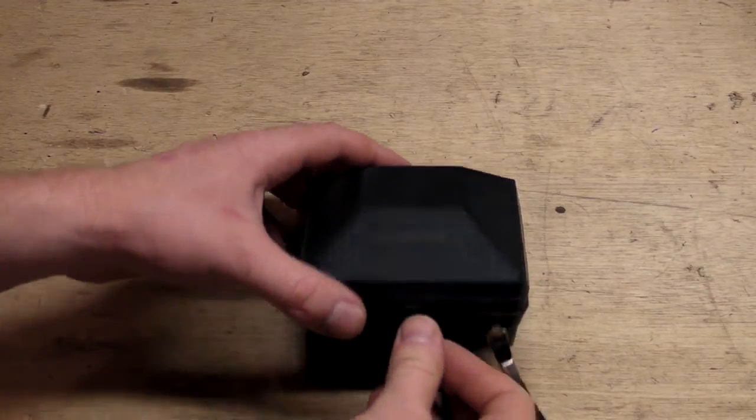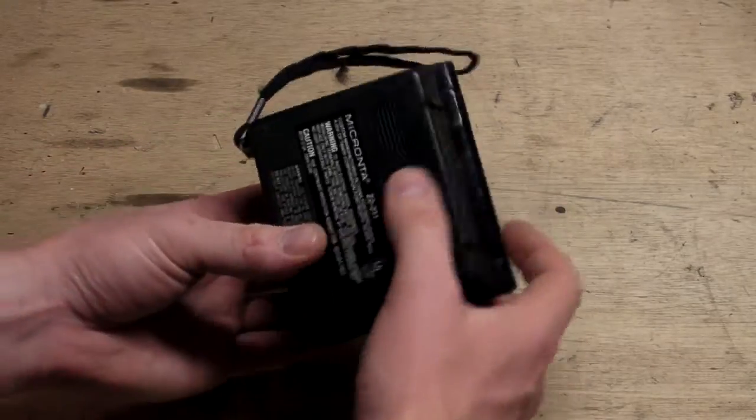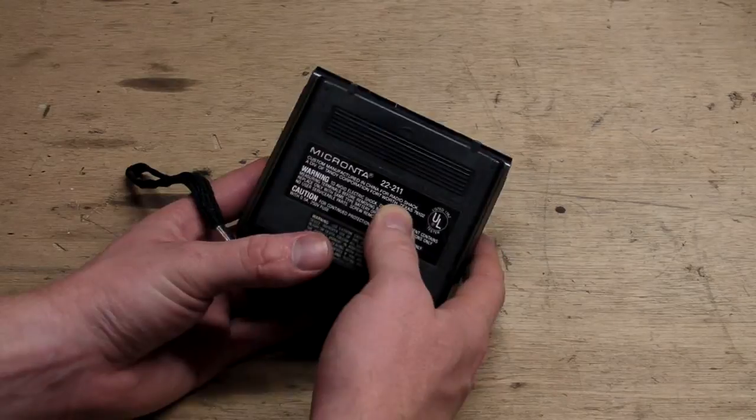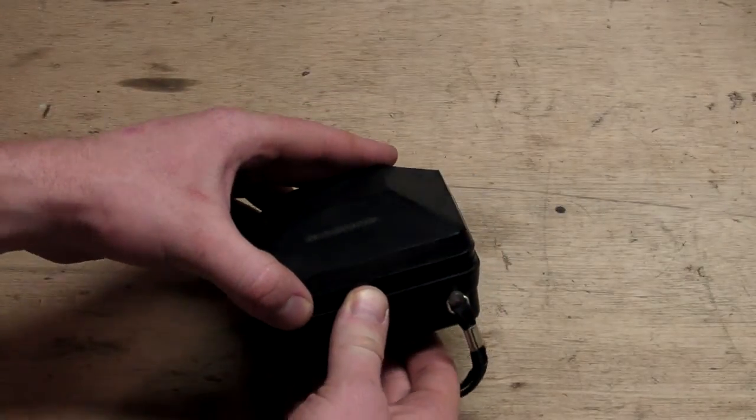Here's a quick look at the very first meter I ever had. It's a Micranta, model number 22-211. My dad bought it for me from Radio Shack when I was in fifth grade.